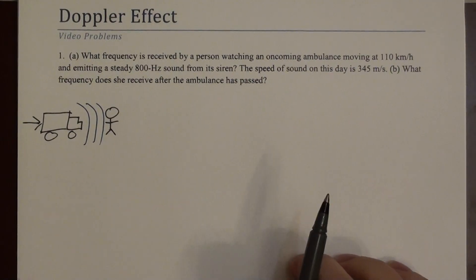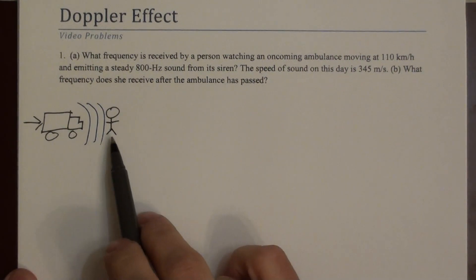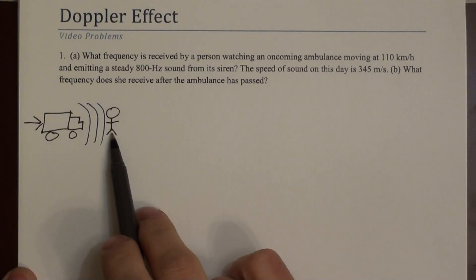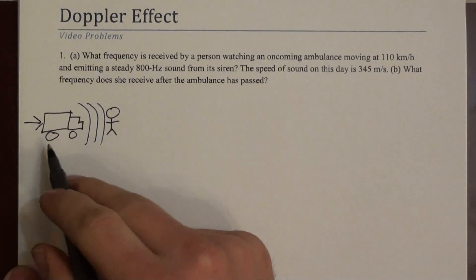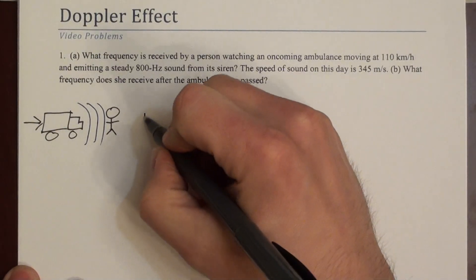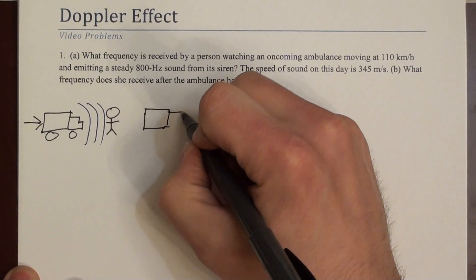The ambulance is moving this way and emitting sound waves toward the observer. So the question is, what frequency is received by the observer? And then the second question is, once the ambulance passes, once the ambulance drives by, now what frequency is observed by the listener?